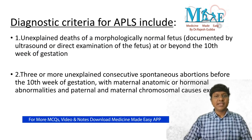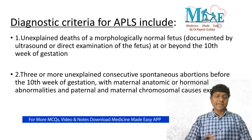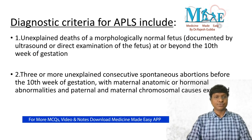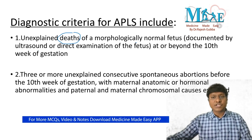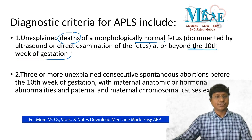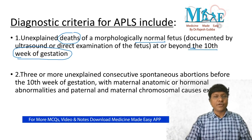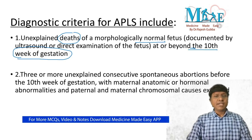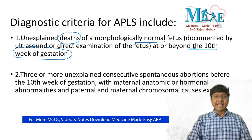What is the criteria for APLA in pregnancy? There are three important diagnostic criteria. Number one: there should be unexplained death of a morphologically normal fetus at or beyond the 10th week of gestation. You have to document it by ultrasound or direct examination of the fetus.